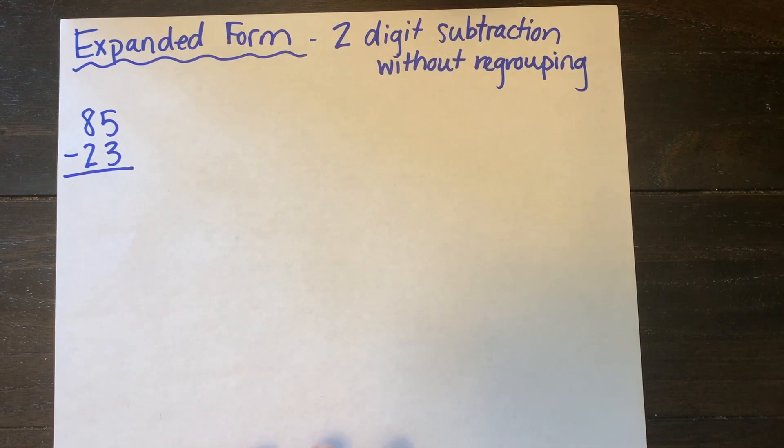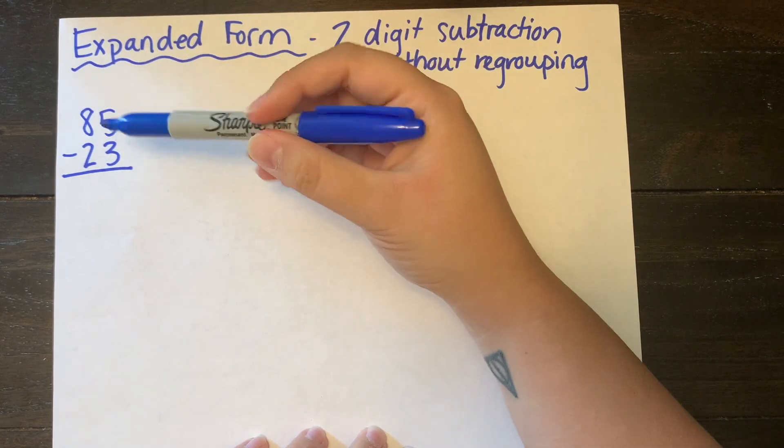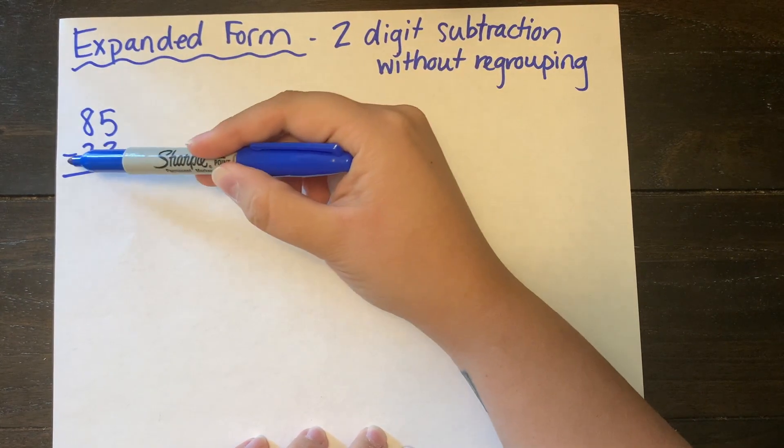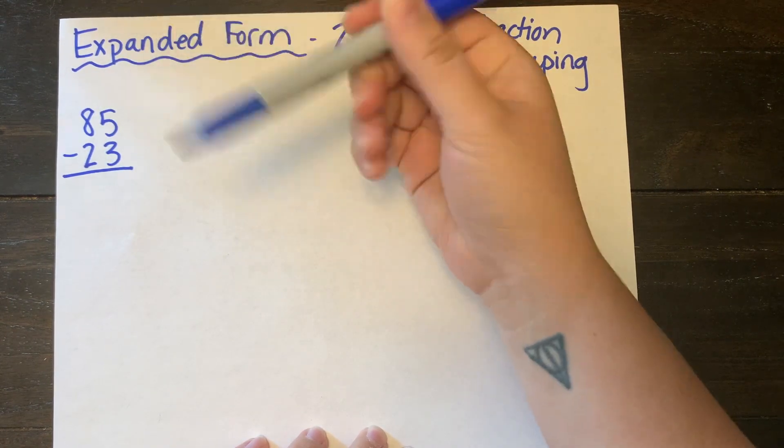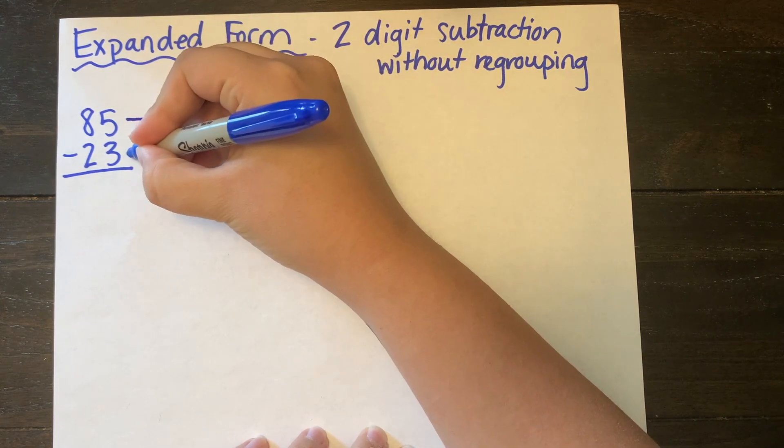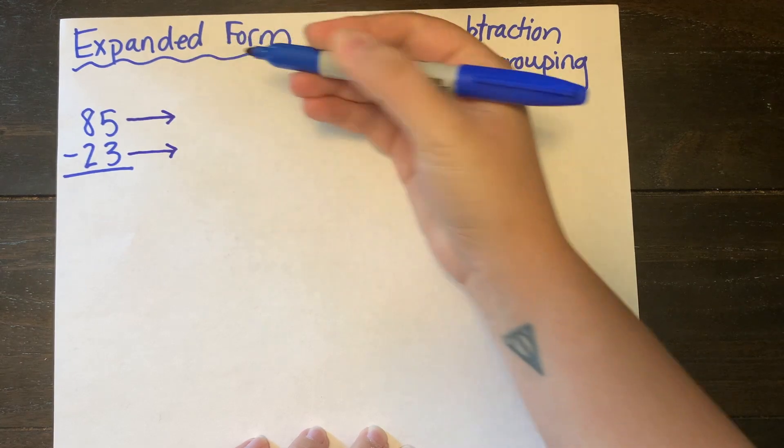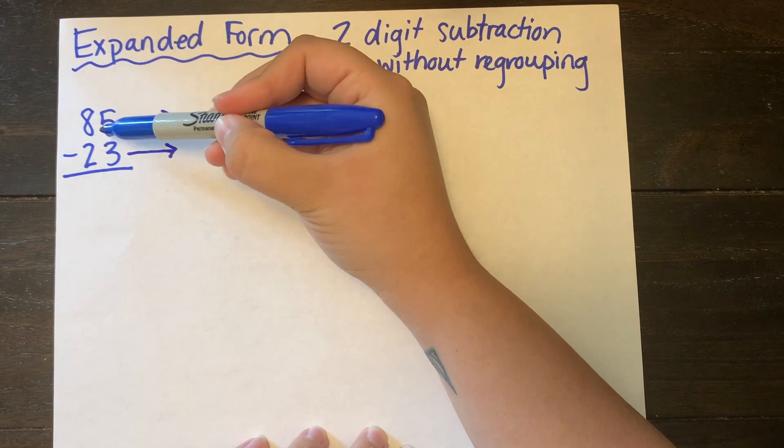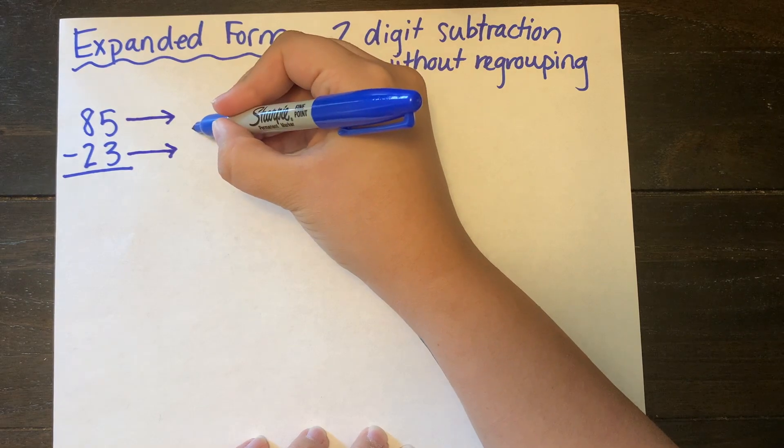So today we're going to be subtracting 23 from 85. This is a two-digit problem. I'm going to draw my arrows to show where I'm going to expand out those numbers and then as usual I'm going to draw my placeholders.